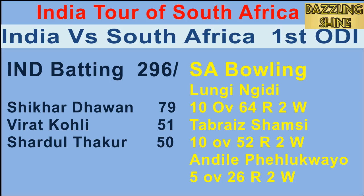Fifth ball of the 34th over, Nagidi to Shreyas Iyer — short ball, Iyer looks to play, takes the edge to the wicket keeper, and that's the end for Iyer. He's gone for 17.